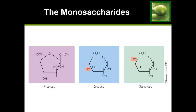This slide shows us how the different monosaccharides look. Again, we have fructose, glucose, and galactose. You don't need to know how to draw these or the exact chemical makeup, but notice the atoms that compose carbohydrates. Carbohydrates are made of only carbon, hydrogen, and oxygen.